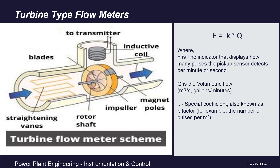Another important part worth mentioning is the straightening vanes. At the inlet side of the flow meter there are parallel horizontal plates — these are straightening vanes — and their purpose is to evenly distribute the stream jet across all the blades. Mechanical stabilizers are also mounted in the structure to avoid flow turbulence. The frequency with which these changes occur is monitored and sent to the transmitter, and this frequency is directly proportional to the flow velocity.